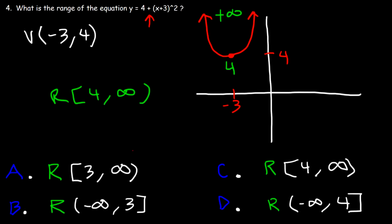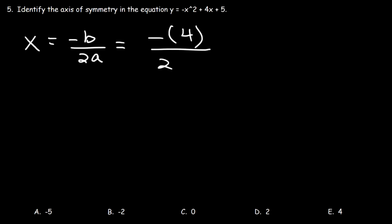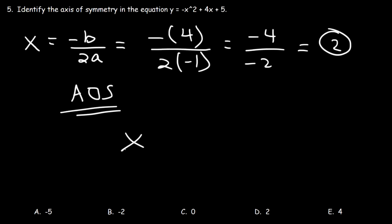Number five: identify the axis of symmetry for y equals negative x squared plus 4x plus 5. We have a quadratic in standard form. The x-coordinate of the vertex — which is the axis of symmetry — is negative b over 2a. Here b = 4 and a = −1, so it's negative 4 divided by negative 2, which equals positive 2. The axis of symmetry is x = 2, so answer choice D is correct.